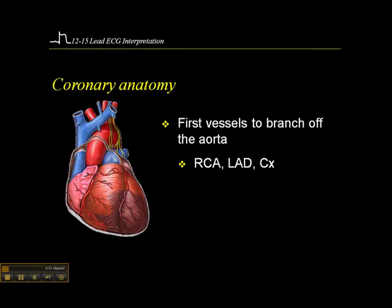The first vessels that branch off the aorta are the coronary vessels, and they come off the aorta around here. There's the right coronary artery, which travels along here, and the left main coronary artery — which is a short artery that quickly bifurcates into the left anterior descending coronary artery and the circumflex artery.